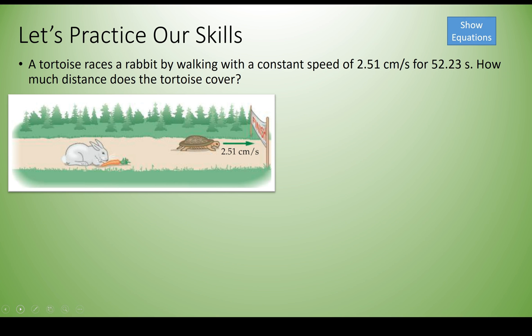We have a little bit of visualization given to us. We can see the tortoise walking past the hare, and we want to know how much distance does he cover. So we have this distance that we want to know. We're given his speed, and we're given the time is 52.23 seconds. So we have a couple of different pieces of information.